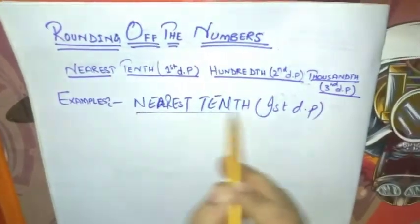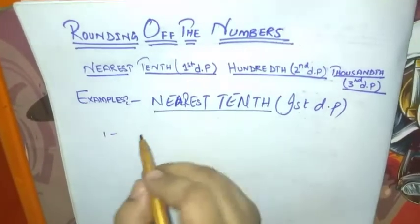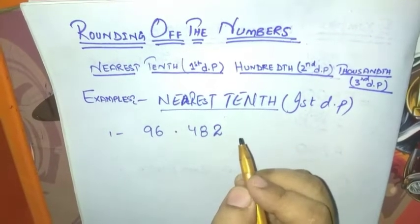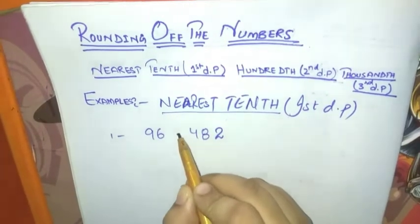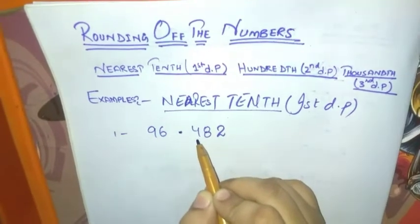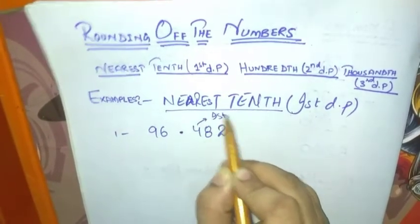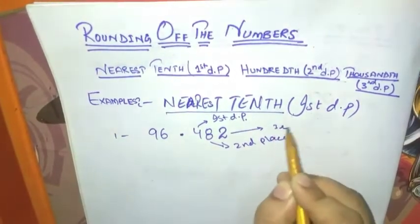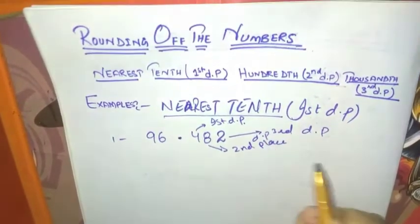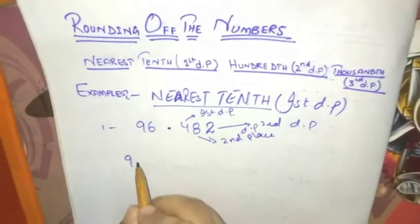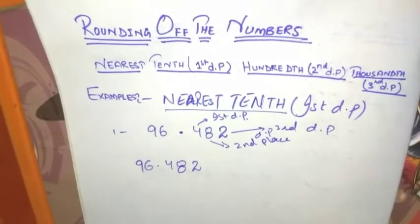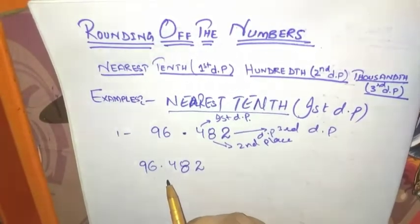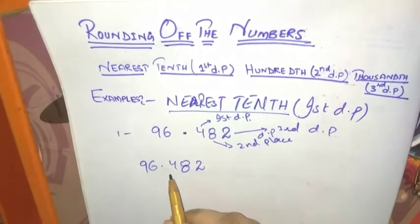For the nearest tenth place, example number one is 96.482. After the decimal point, the first number is the tenth place, that is the first decimal place. The second number is the second decimal place and the third number is the third decimal place. For rounding to the nearest tenth, the first step is to underline the digit in the tenth place.